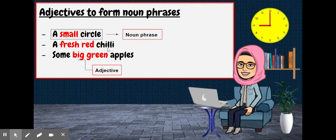Then you may also use adjectives to form noun phrases. For example, a small circle. A small circle is a noun phrase. This noun phrase consists of adjective small and noun. So small here describes the circle, describes the noun circle. So we call this one as a noun phrase. A fresh red chili. The word fresh and red are adjectives because they describe the noun chili. Some big green apples. Big and green are adjectives. They are describing the noun apples.